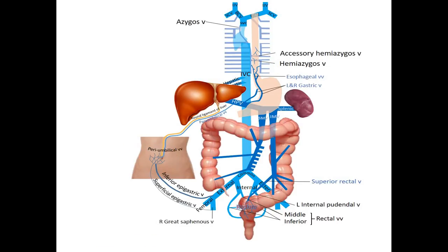First we will look at the blood flow in these areas in a healthy individual. From the esophageal veins, blood may flow to the azygous vein, to the superior vena cava, and back to the heart. Alternatively, it may flow into the portal system via the gastric veins to the hepatic portal vein and then traverse the liver to return to the heart.